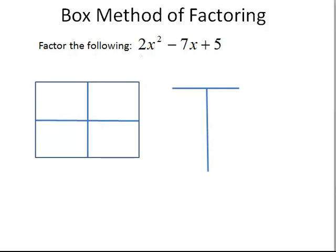We're going to factor the given trinomial, 2x squared minus 7x plus 5, using the box method of factoring.